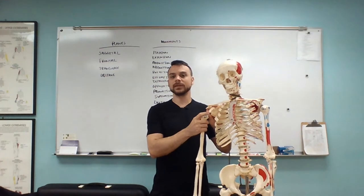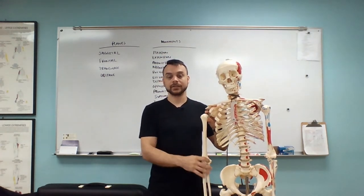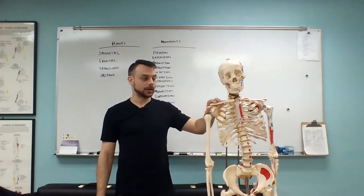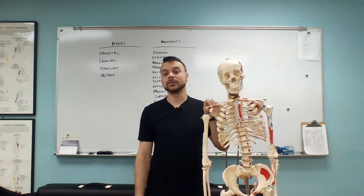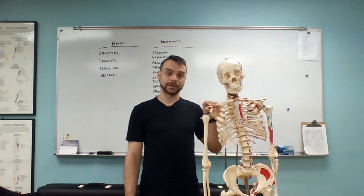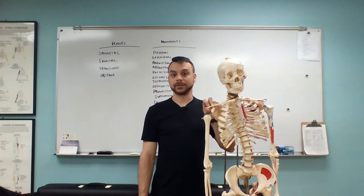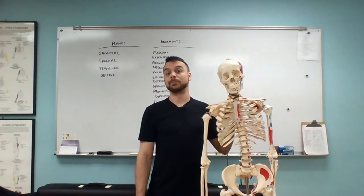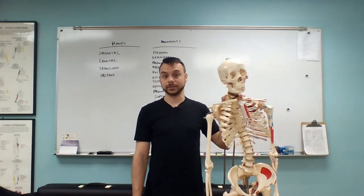The movement of joints occurs in the plane and the movement originates at the axis. A joint can move in one plane of the body — uni-planar — or in two planes — bi-planar — or in multiple planes — multi-planar. If it's a uni-planar joint, it usually has one axis, giving us a uni-axial joint. Two planes gives us a bi-axial joint, and multiple planes gives us a tri- or multi-axial joint.